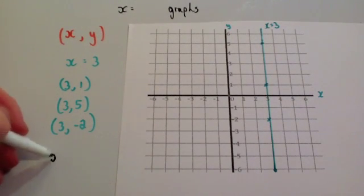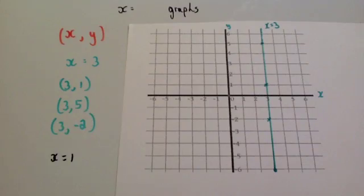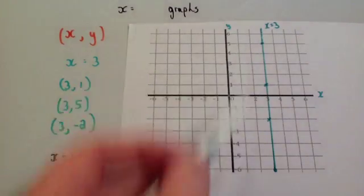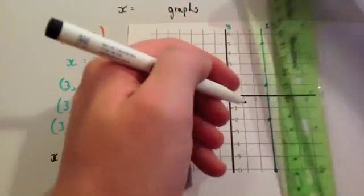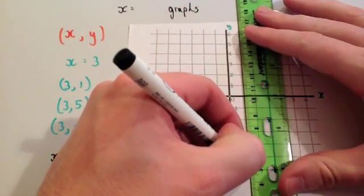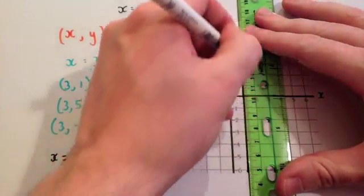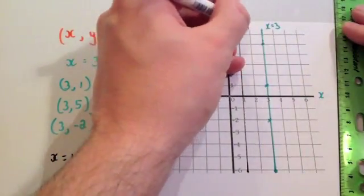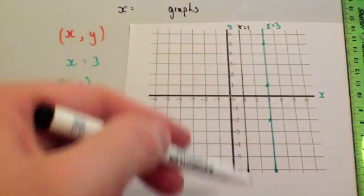If we were asked to draw the graph x equals 1, they would all be 1 across, and so many up or down. So it would be a vertical line going through the x axis at 1. So it would look like this. And that would be the graph x equals 1. So it goes through the x axis at 1.